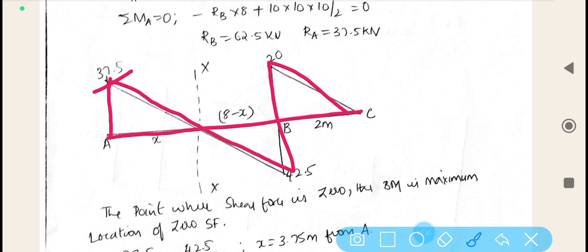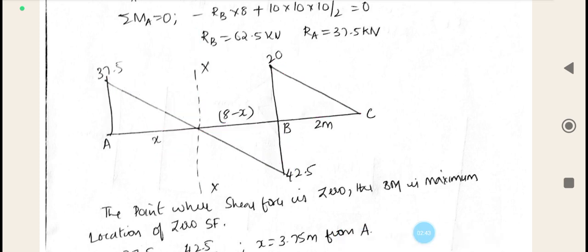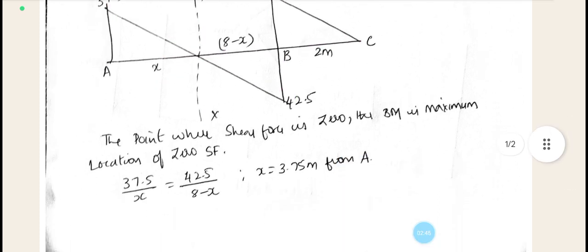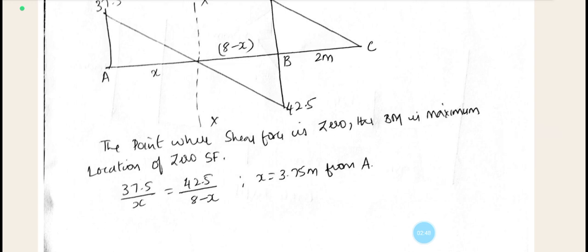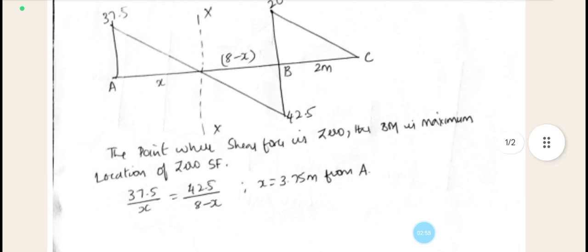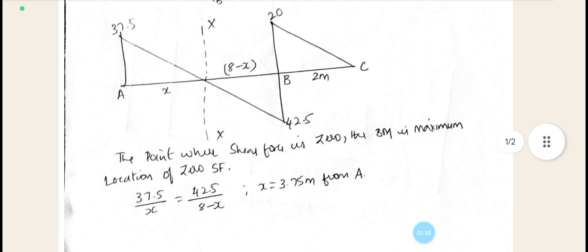We need to know what is the bending moment at the point. These two points we have to calculate. This is X distance, this is section XX, this is 8 minus X, this is the overhanging 2 meter. The point where the shear force is 0, the bending moment is maximum. So we are trying to locate the position of the 0 shear force from the concepts of similar triangles. By applying the concept of similar triangle, we will get to know the value of X. That is X we found out after all the calculation as X is equal to 3.75 from A.